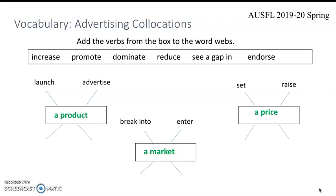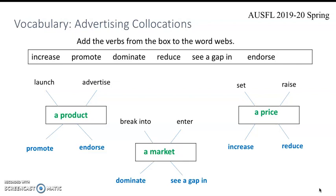Now let's go on working on collocations. In this exercise you will add the verbs from the box to the word webs — pause your video please. Here are the answers, going over the verbs one by one: increase a price, promote a product, dominate a market, reduce a price, see a gap in a market, endorse a product. These are the important collocations related to advertising.